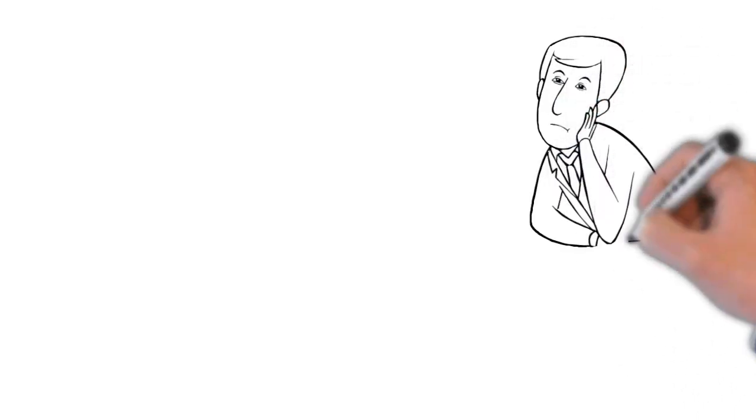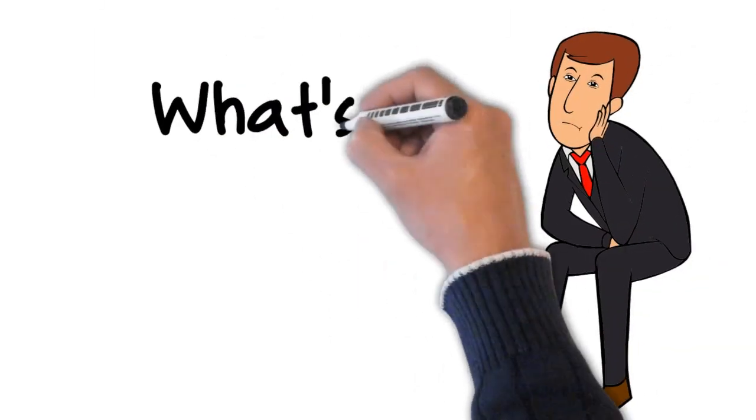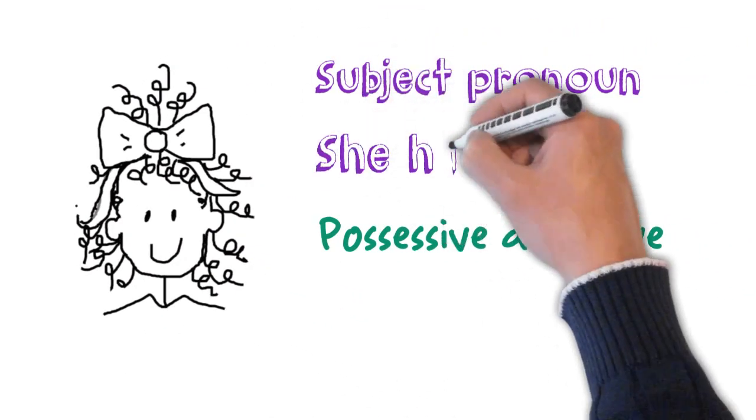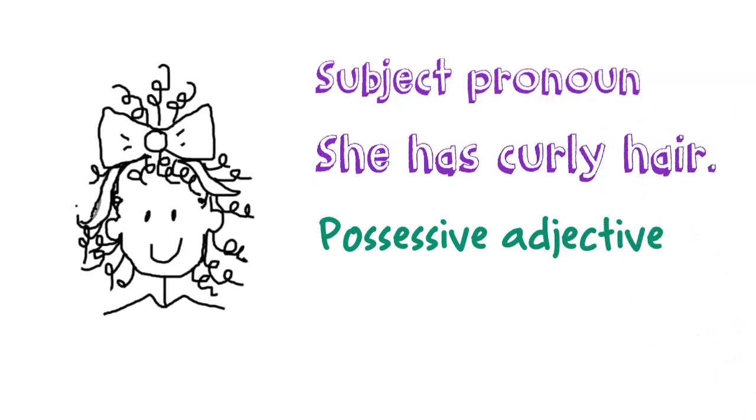Let's look at the difference between subject pronouns and possessive adjectives. Subject pronoun: She has curly hair. Possessive adjective: Her hair is curly.